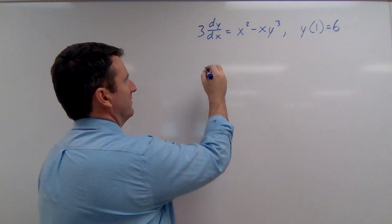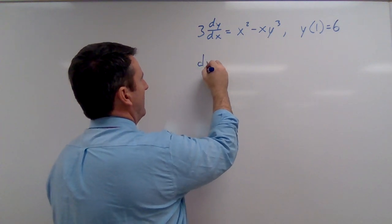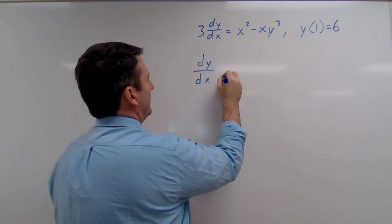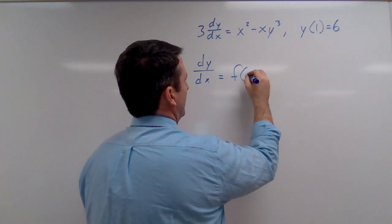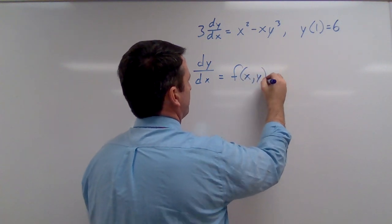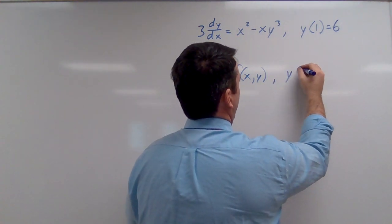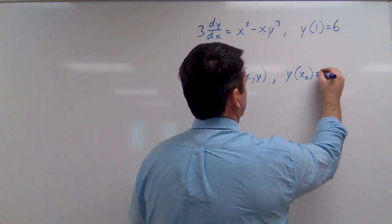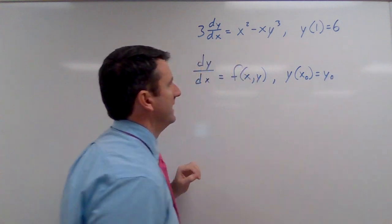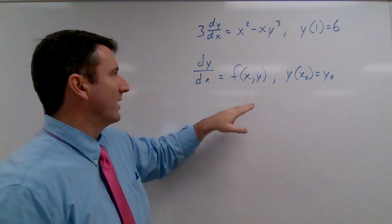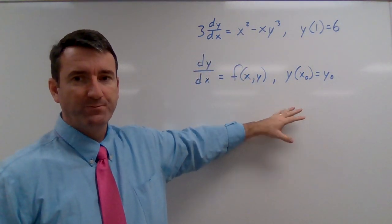If we've got an initial value problem in the form dy/dx equals some function f of xy, and y of x naught is equal to y naught, then we're going to have a unique solution over some interval around x...